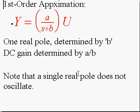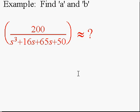Let's start with a first order system. If I have a first order approximation, I only have two degrees of freedom. About the only way I can write a first order system is A over S plus B. Note that the pole is determined by B. The DC gain is determined by A over B. Also note that first order systems do not oscillate.